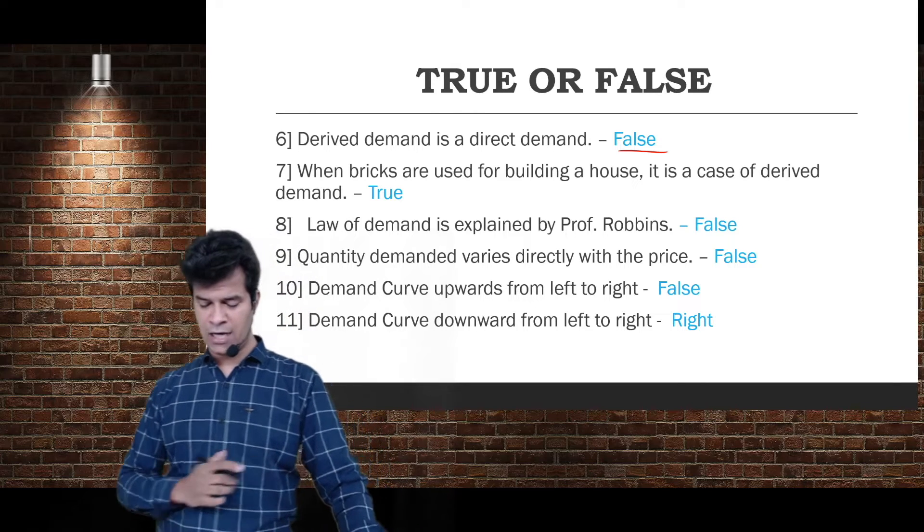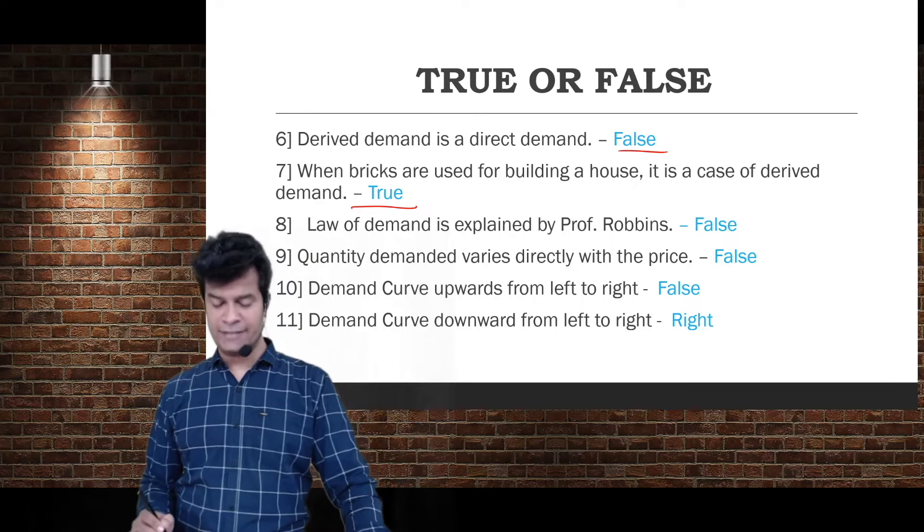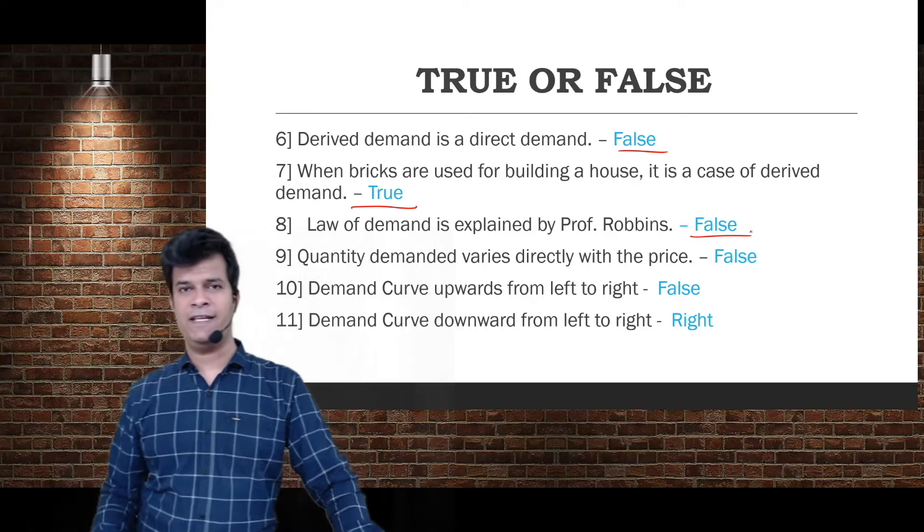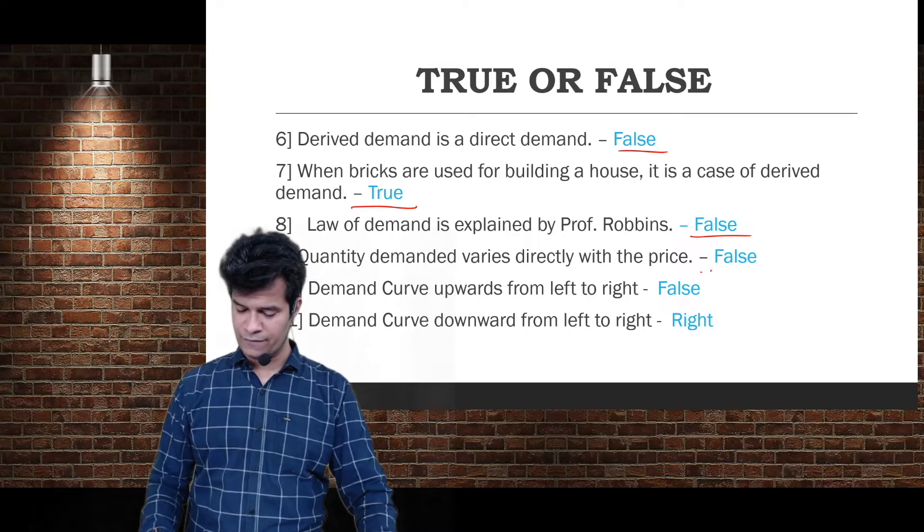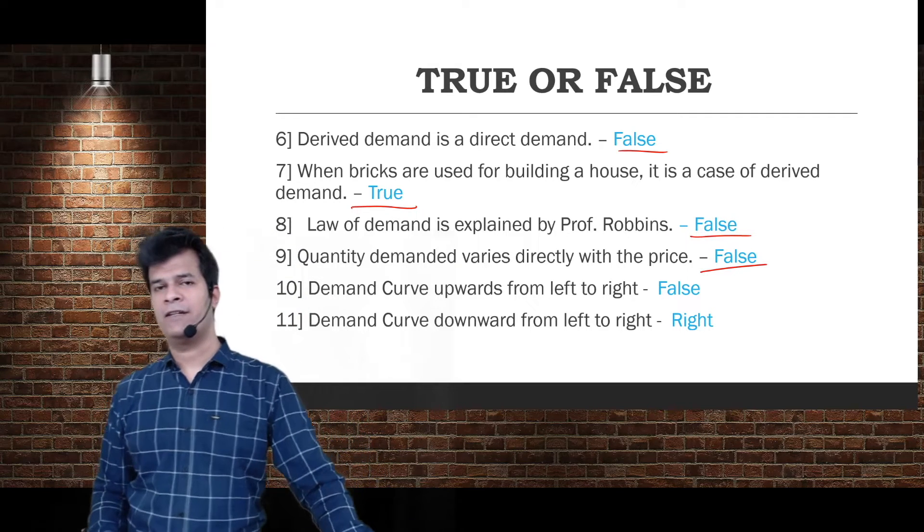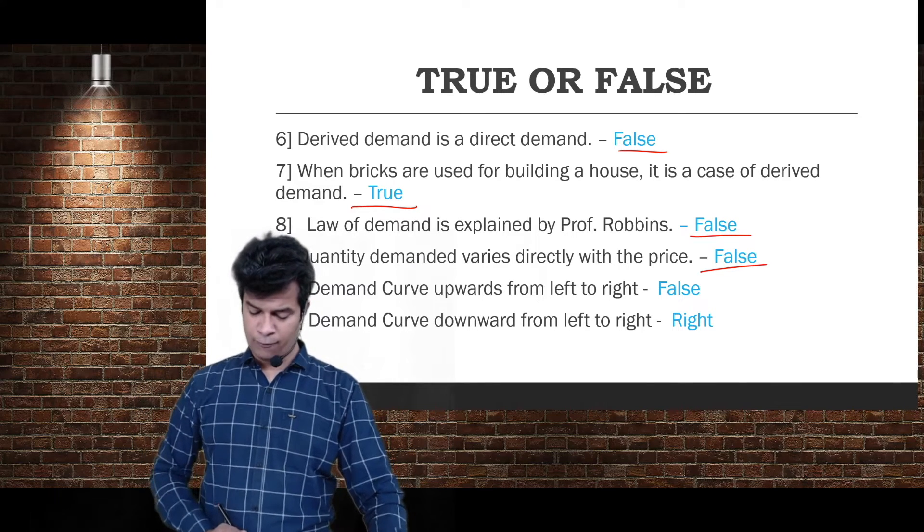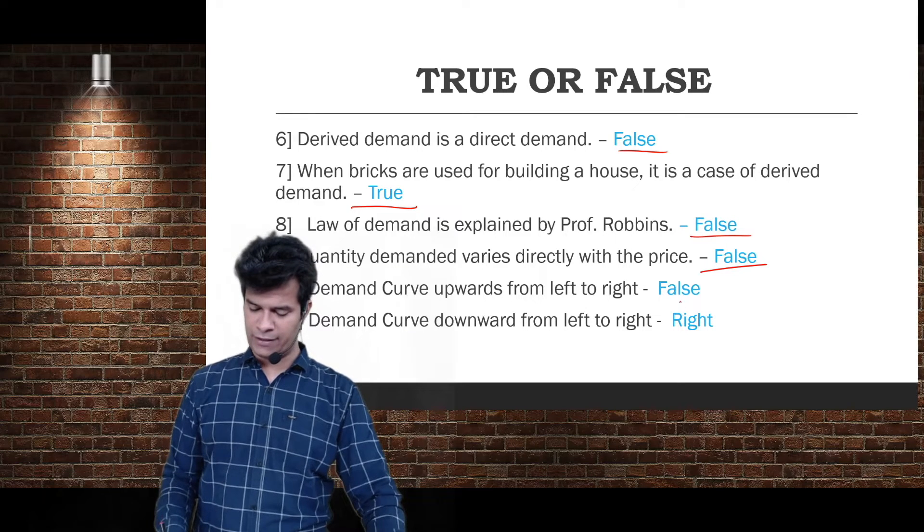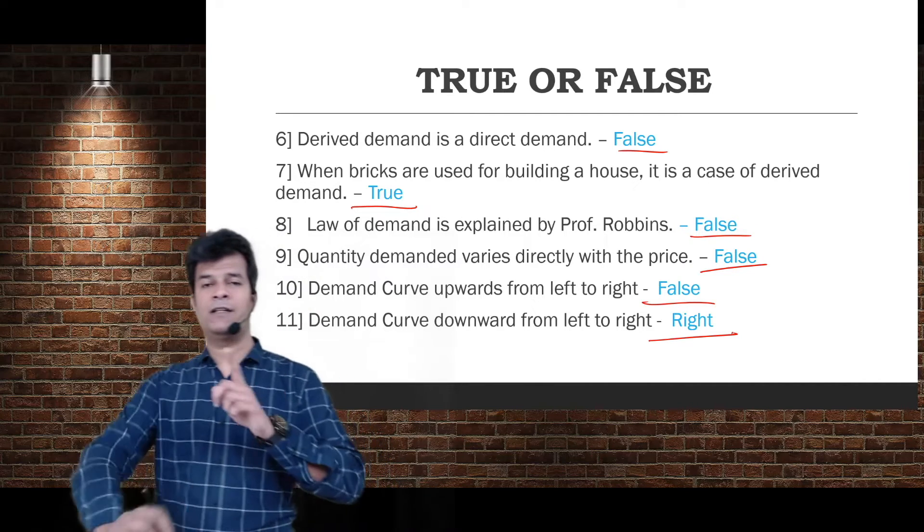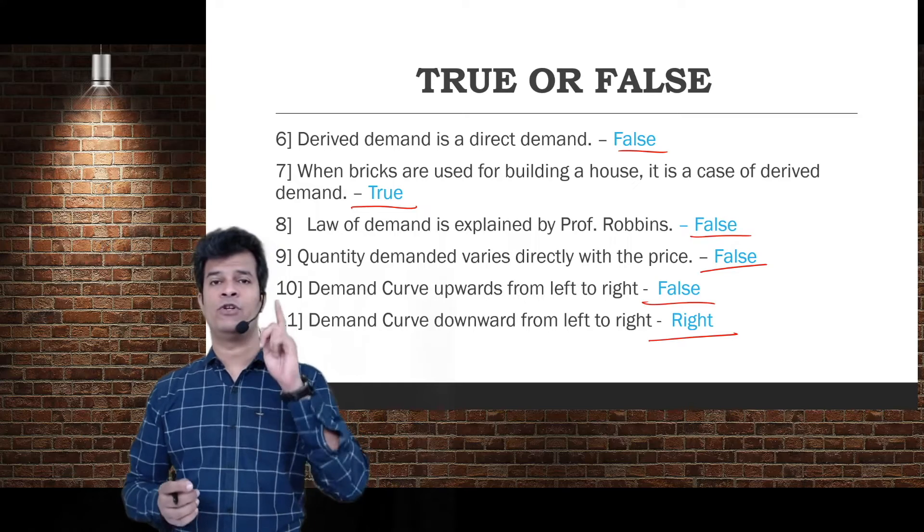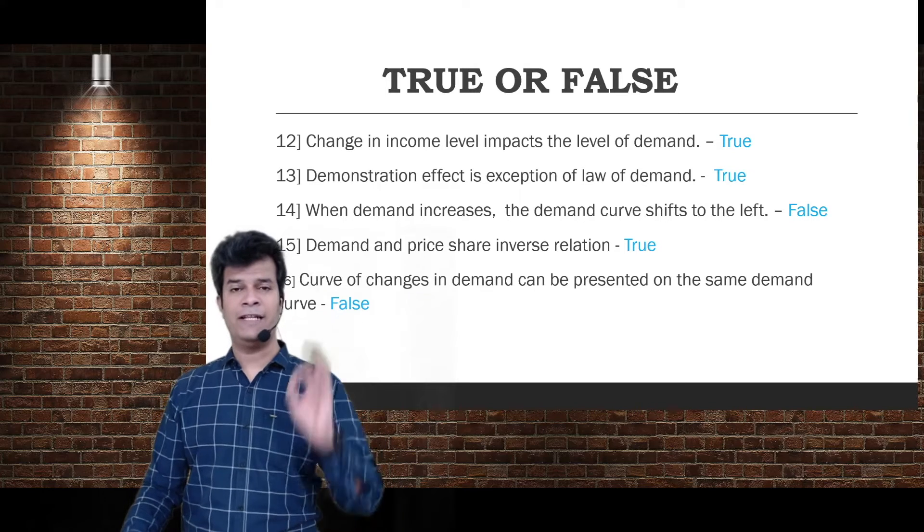Taste, habits, and fashion do not affect the demand - false. Derived demand is direct demand - false, derived demand is indirect demand. When bricks are used for building a house it is a case of derived demand - true. Law of demand is explained by Professor Robbins - false, it was Alfred Marshall.